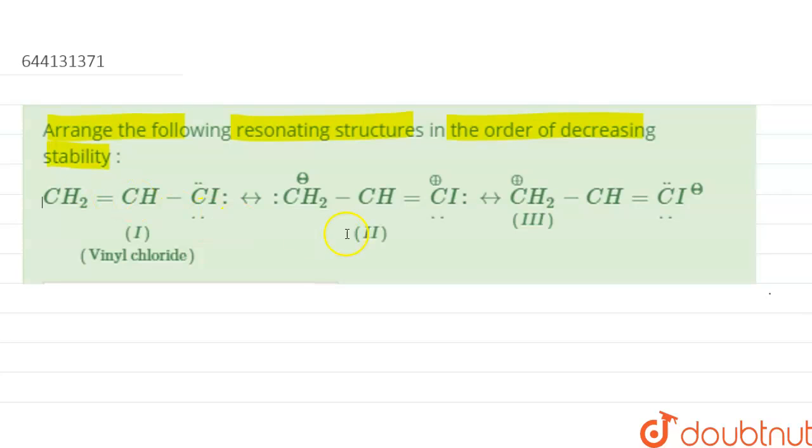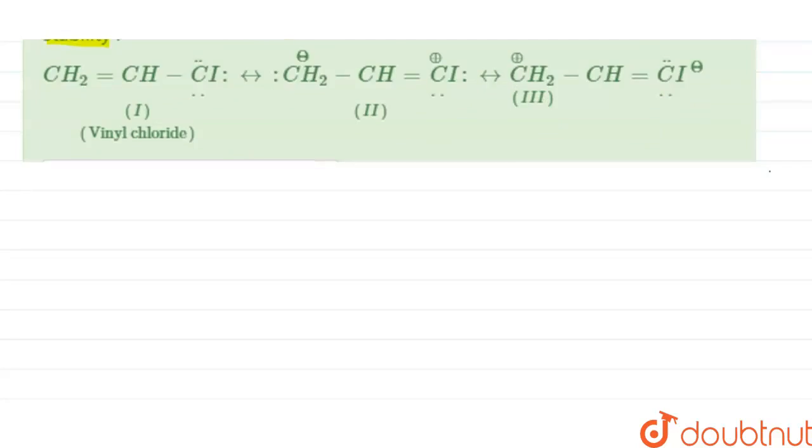So let us analyze the stability criteria of the resonating structures. The first stability criteria is we have to identify that structure in which all the atoms of the molecule is having zero formal charge.